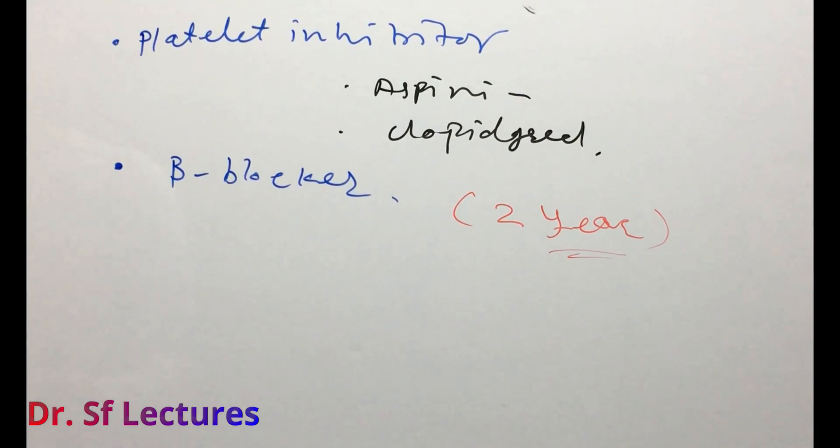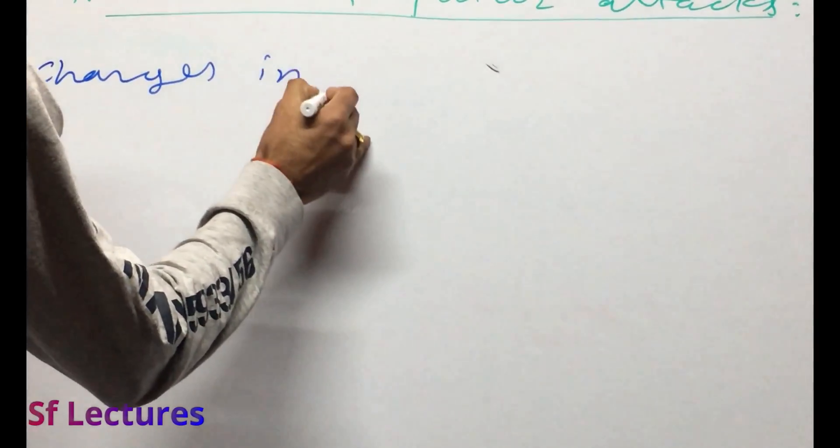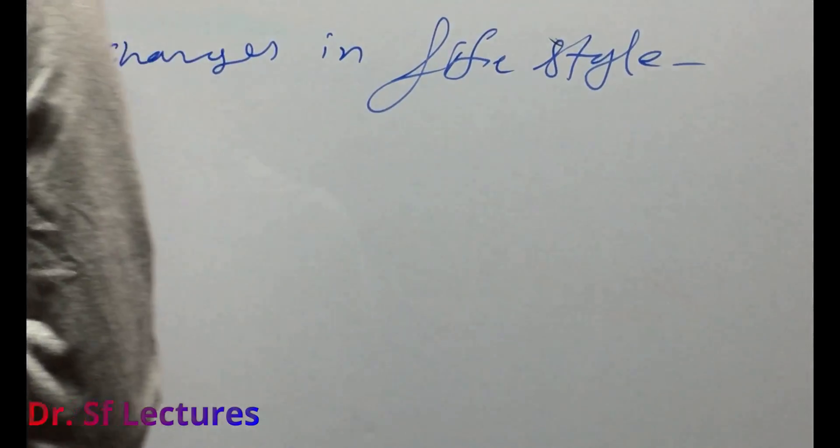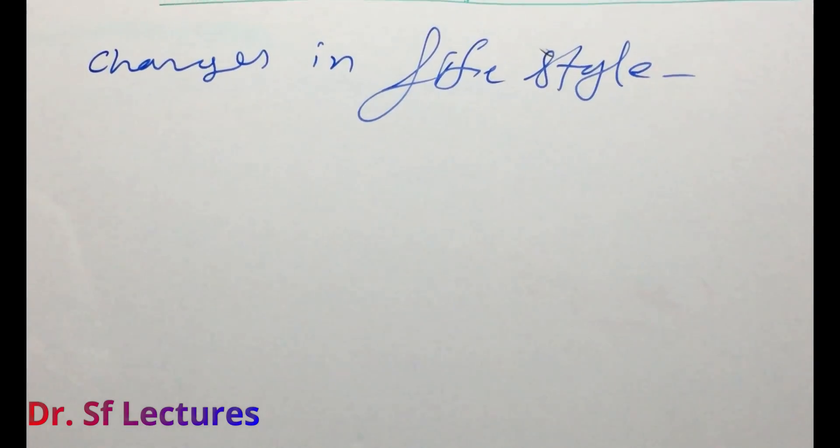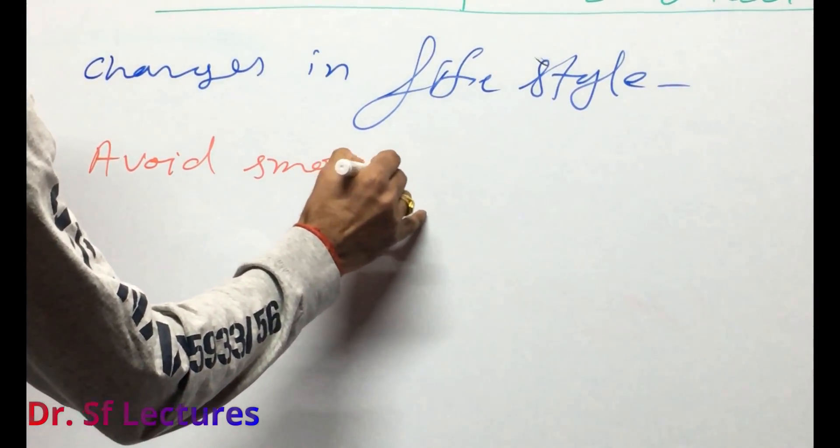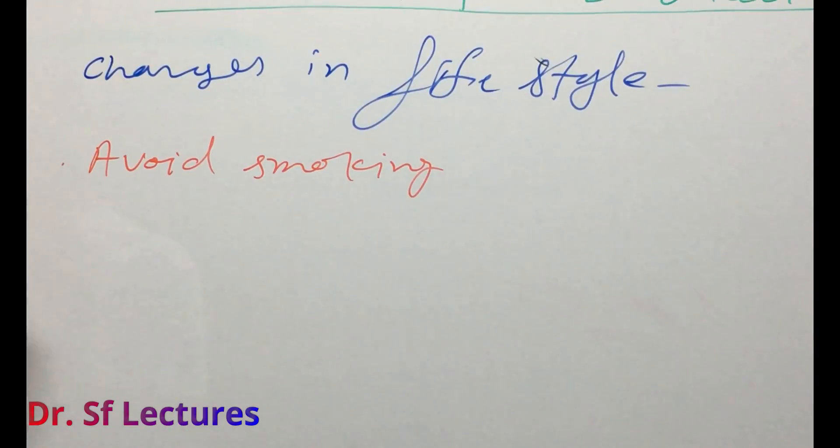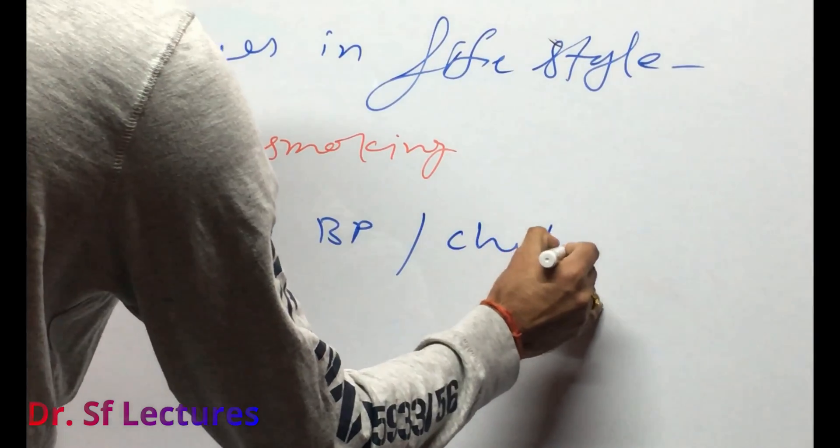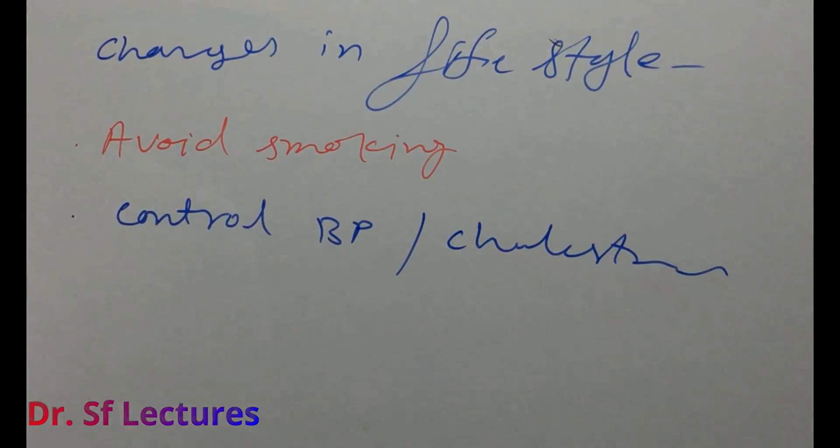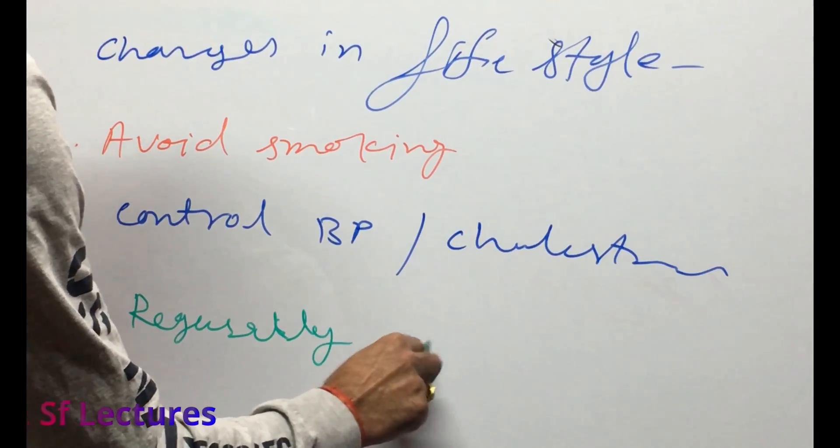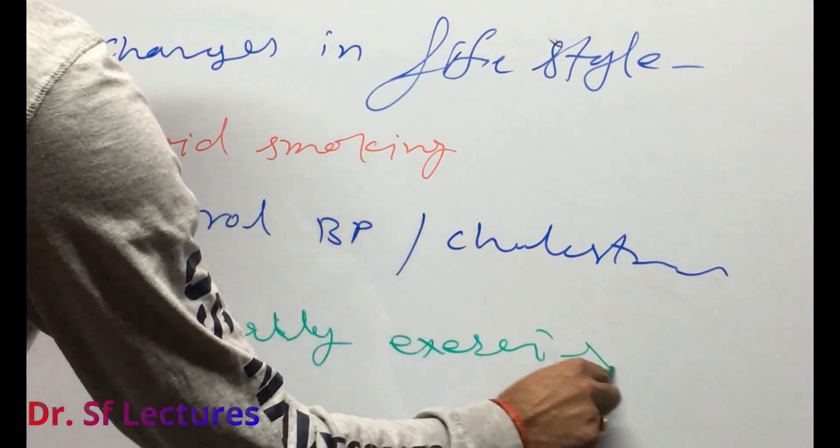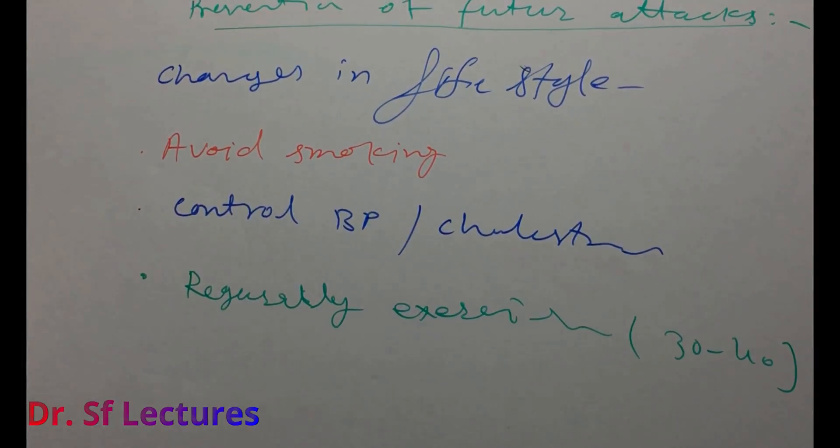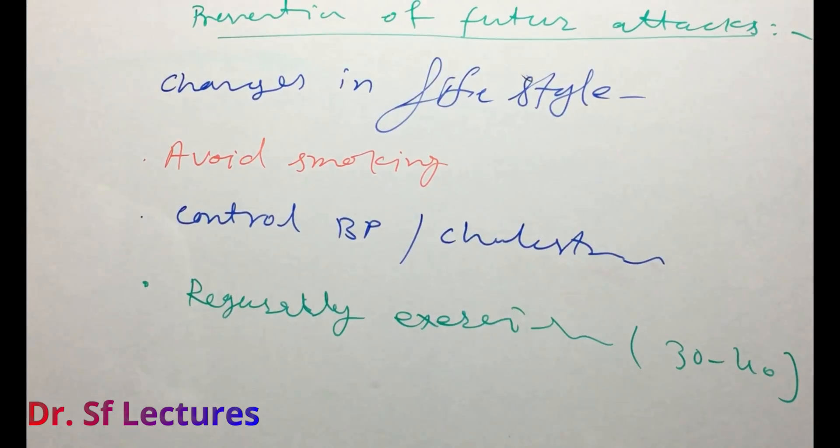Non-pharmacological prevention includes changes in lifestyle. Changes in lifestyle like avoid smoking, control blood pressure and cholesterol, regularly exercise at least 30 to 40 minutes, and maintain healthy diet.